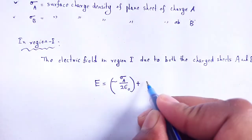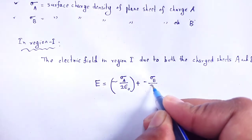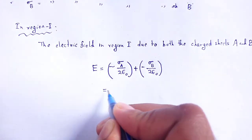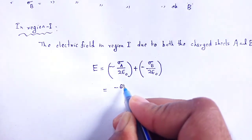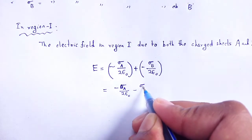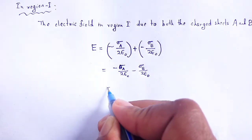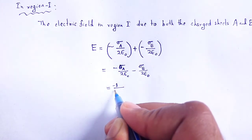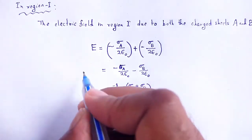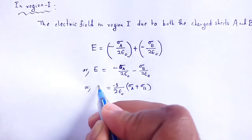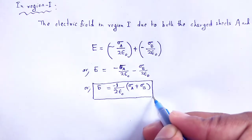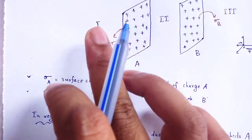Again for charge sheet B that is minus sigma B divided by two epsilon-not. So the total electric field in region one equals minus sigma A divided by two epsilon-not minus sigma B divided by two epsilon-not. Taking minus one divided by two epsilon-not as common, we get E equals minus one over two epsilon-not times (sigma A plus sigma B). This is the electric field intensity in region one.